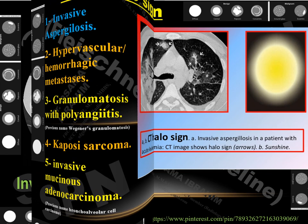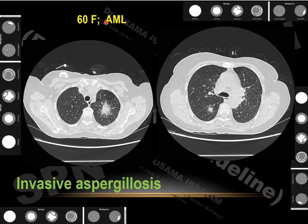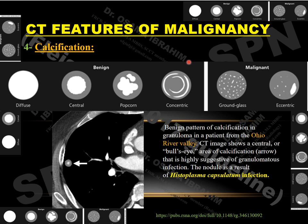A 60-year-old female with a history of acute myeloid leukemia presented with nodules in the left upper lobe and superior segment of the right lower lobe, with a ground glass halo. In this immunocompromised patient, it was diagnosed as invasive aspergillosis. Summarizing the CT features of malignancy so far: spiculated margins or corona radiata, ground glass within the nodule, and air bronchogram all raise the possibility of malignancy.